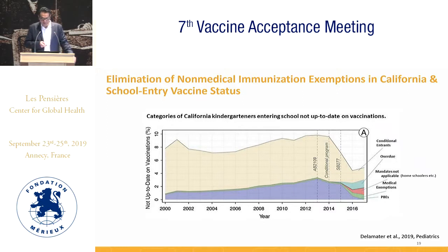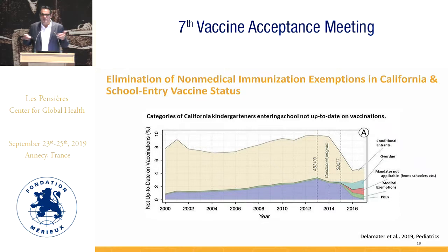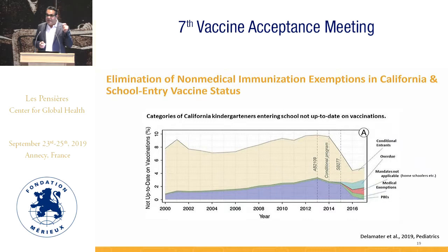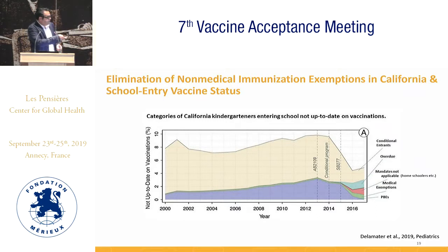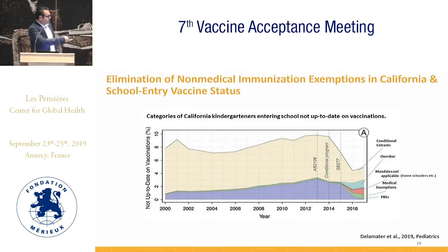There was also an 'overdue' category, which essentially means people not fully complying with the law — these kinds of mass interventions are hard to apply uniformly. There was an overall increase in coverage in California, but the biggest increase likely came through the drop in conditional entrance. So the administrative effort seemed more effective and was actually the key driver — within two years, the replacement mechanisms were almost a total wash.